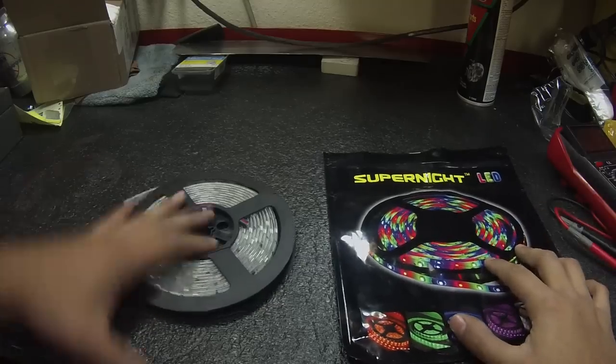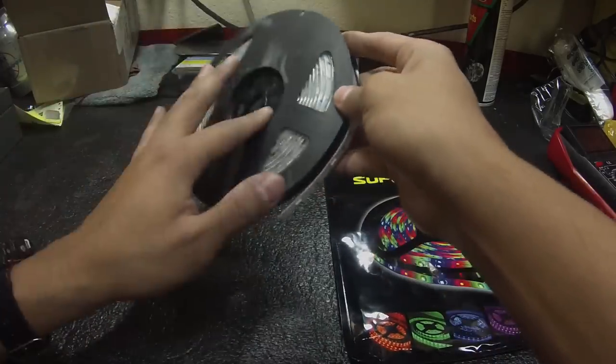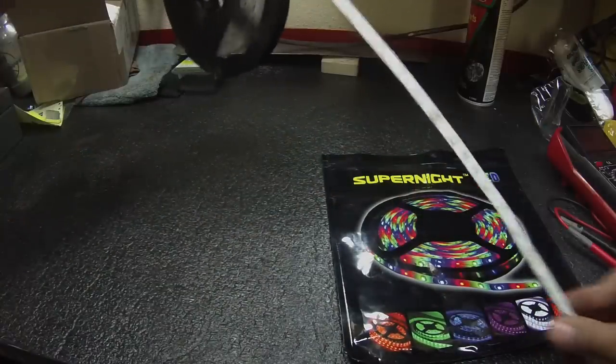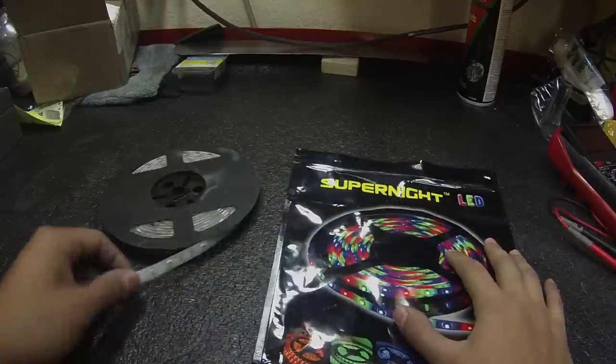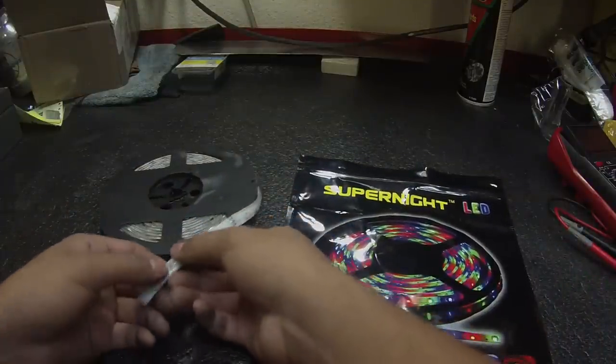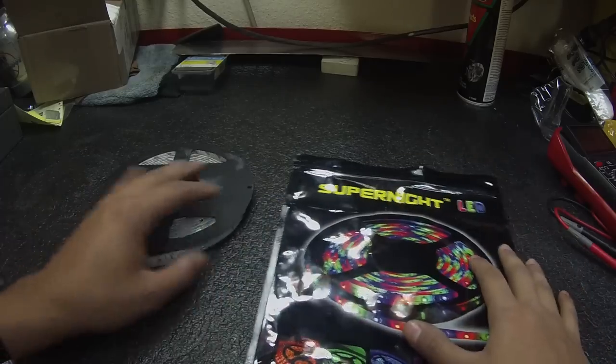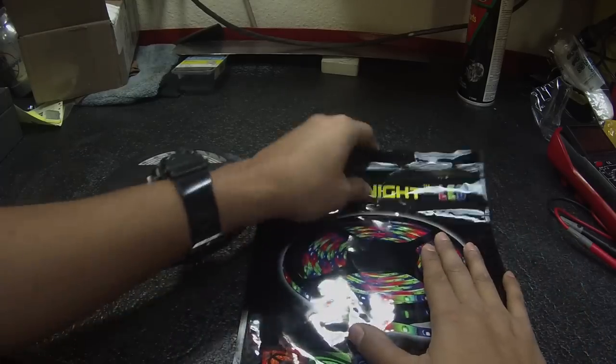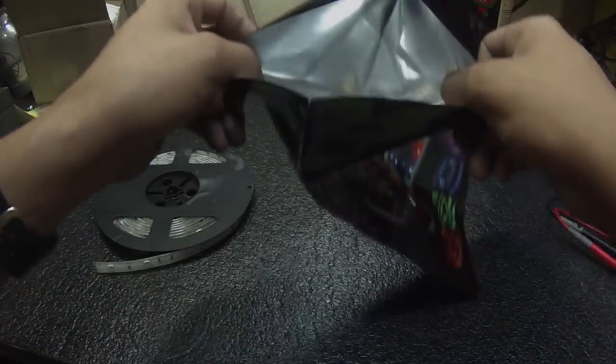Alright, so it's a spool just like this one right here. You can put it on a roller so that it rolls out just like that, or you can just leave it how it is. But just make sure you save the bag because those LEDs are sensitive to static, and that bag right there is an ESD bag, so it prevents it from getting any damage.